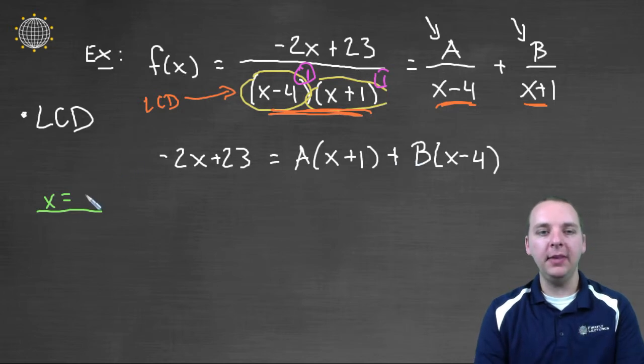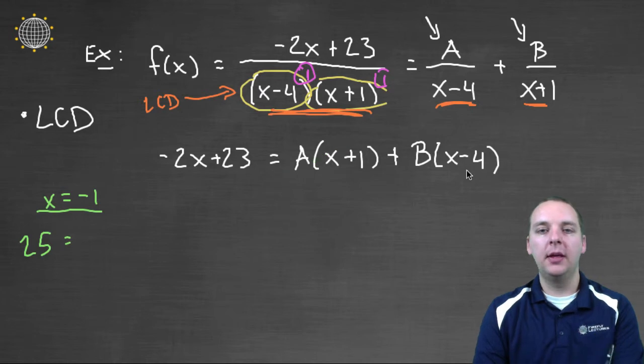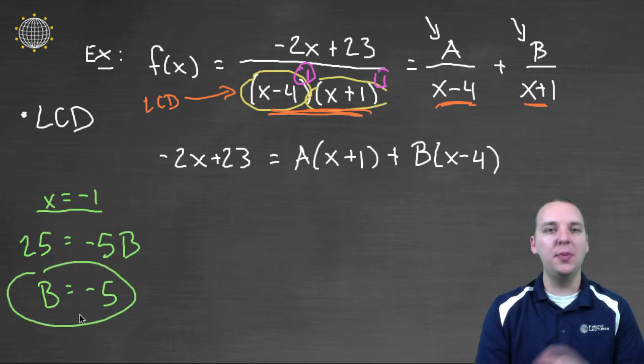Let's try that. If x was negative one, let's do the math. Negative two times negative one is positive two. Two and twenty-three make twenty-five. And this would be zero. That would be gone. And negative one minus four makes negative five B. Well, bam, automatically we see B must be negative five. Negative five times negative five is twenty-five. Wow, that was so nice and simple and easy. No systems, no matrices, just a nice little shortcut, noticing that this was an identity that was always true for any x.